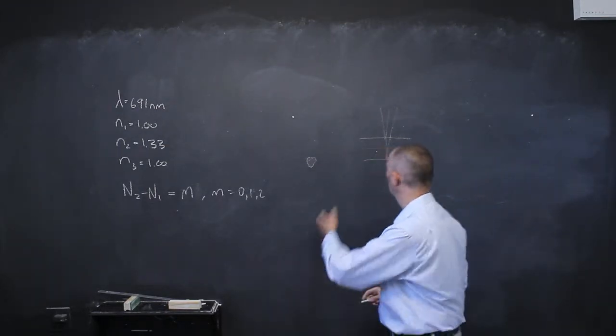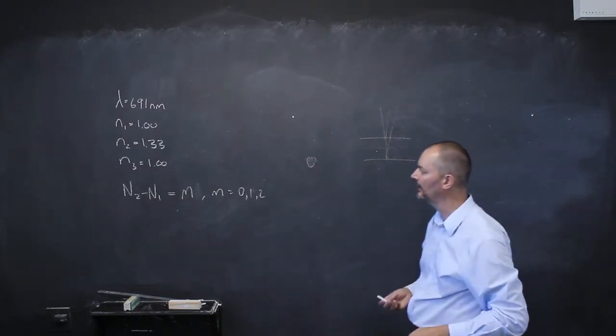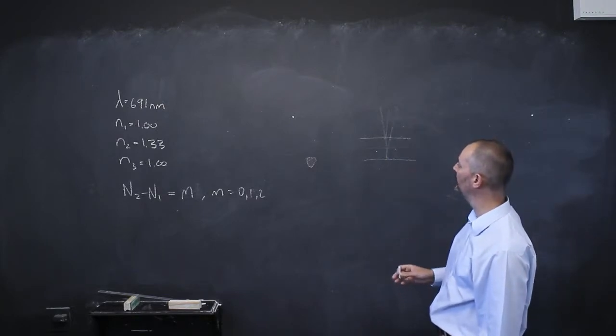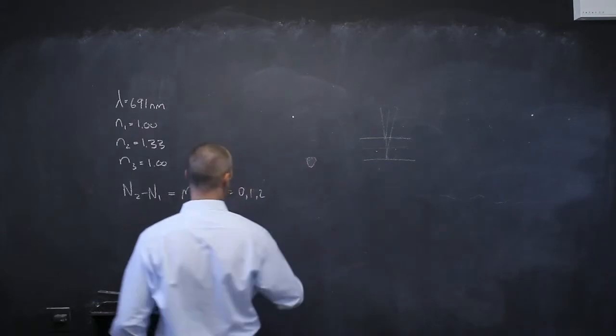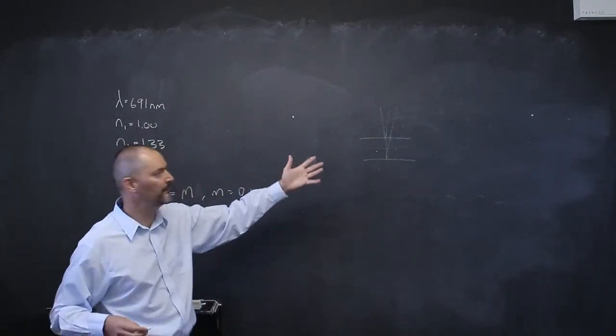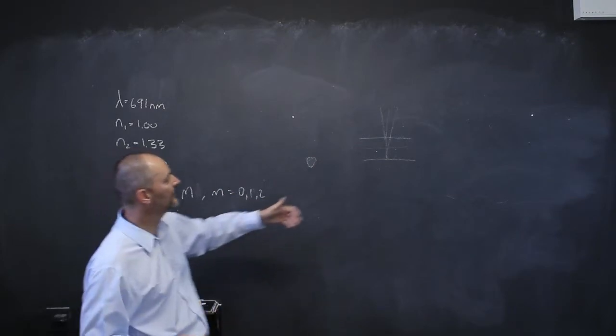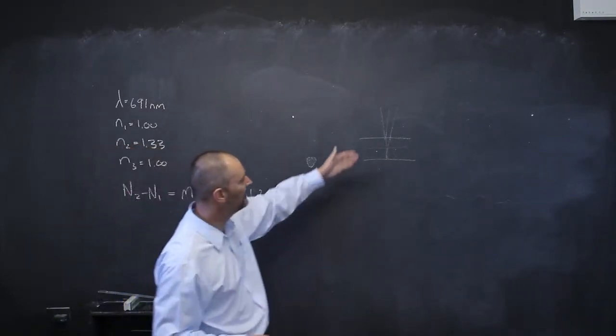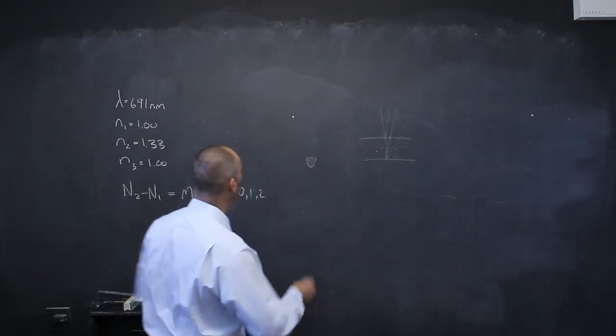So the question for the thinnest film I can use under these circumstances to give me total constructive interference there, it must be a quarter of the wavelength inside of there. So I don't even have to do any of this. Just through understanding the process of what wavelength fits in there, this concept, it's so easy to do. All I need to do is remember, I'm not talking about the wavelength there, I'm talking about the wavelength in there.